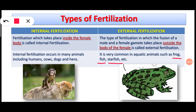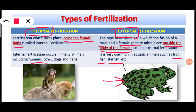Such fertilization — where fusion of male and female gametes takes place outside the body of the female — is called external fertilization. It takes place in frogs, fish, starfish, and many more animals. Internal fertilization is where the fusion of male and female gametes takes place inside the female body. Examples of animals with internal fertilization include humans, cows, dogs, hens, and even monkeys.